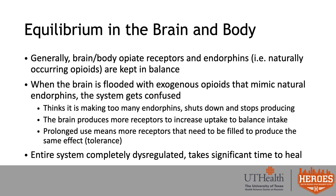Our brain and body have opiate receptors throughout, and endorphins — our naturally occurring opioids — are kept in balance day to day. When we flood the brain with exogenous opioids that mimic natural endorphins, the system is confused. It thinks it's making too many natural endorphins, so it shuts that system down and stops producing them. It also creates more receptors to increase uptake. Prolonged use means more receptors are present in the brain and they need to be filled to produce the same effect — that's tolerance.